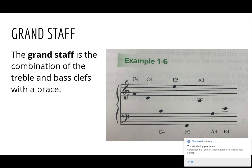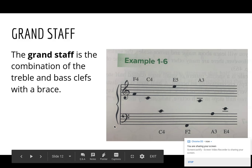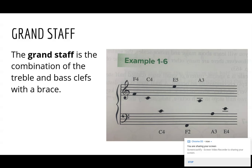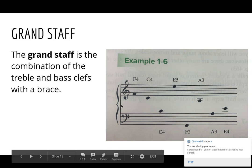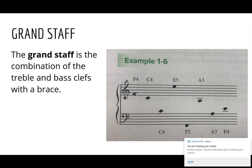The grand staff is the combination of the treble and bass clefs with a brace. So you can see we have our treble clef on top, which makes sense because treble is higher. We have our bass clef on the bottom, and they're connected with a brace. You see this most commonly with piano. You can see it for other instruments and other orchestrations, but you're going to see this if you play the piano. This is how piano music is written, and the interesting thing about the grand staff is that they are connected, and they are relative.